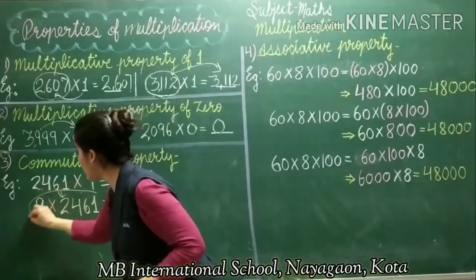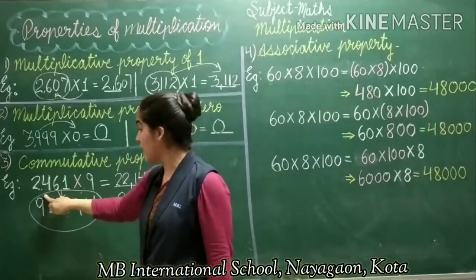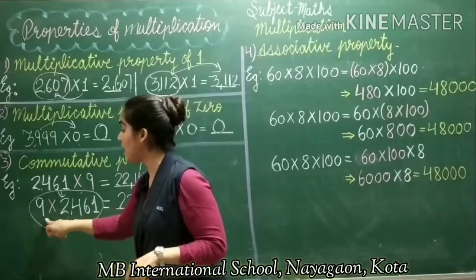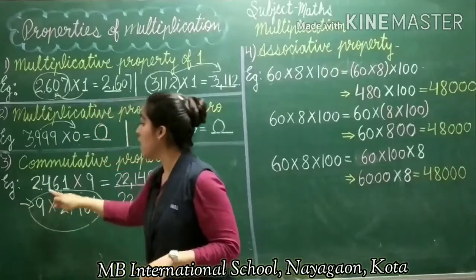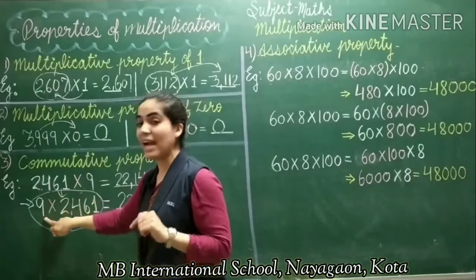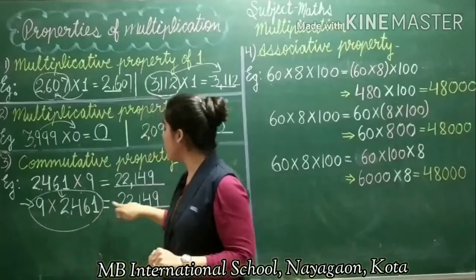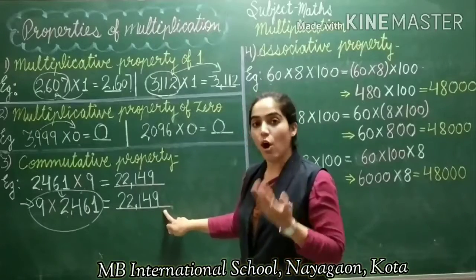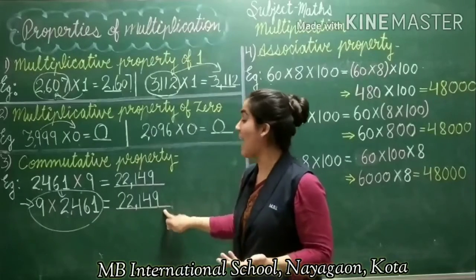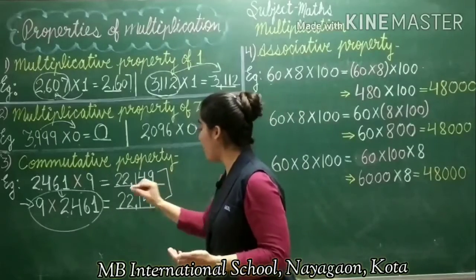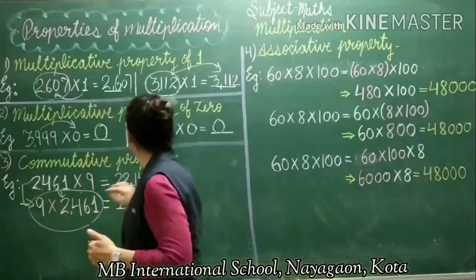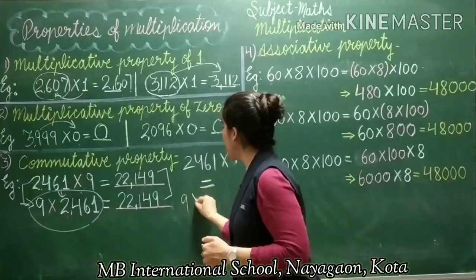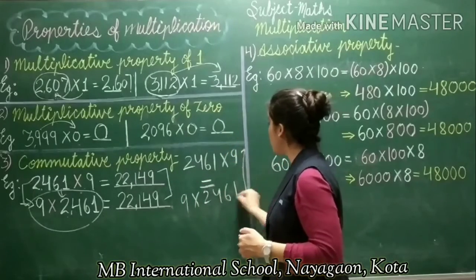Here you can see that I have changed the order. Earlier I had written 2,461 then 9. But now I have written 9 before, then 2,461. So here I have changed the order of multiplying. After changing the order of numbers, I still got the same product 22,149. Whenever we change the order of numbers being multiplied and get the same product, it is called commutative property. Both orders are equal: 2,461 multiplied by 9 is equal to 9 multiplied by 2,461.